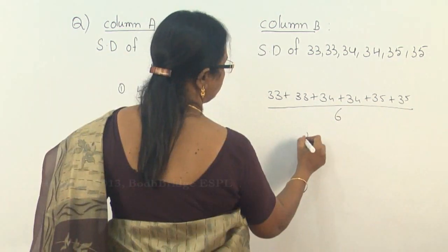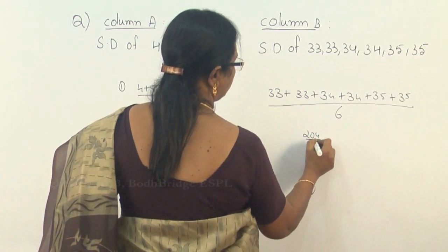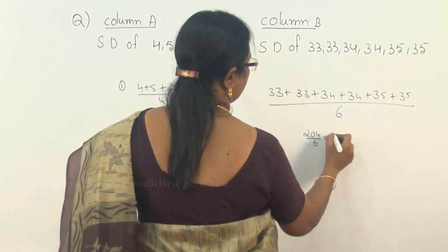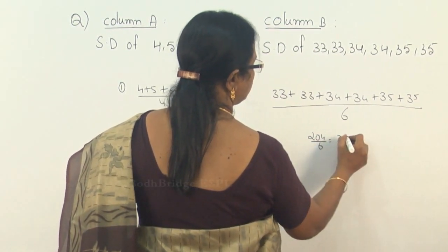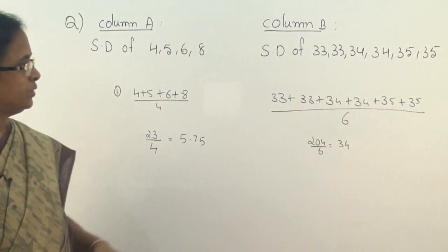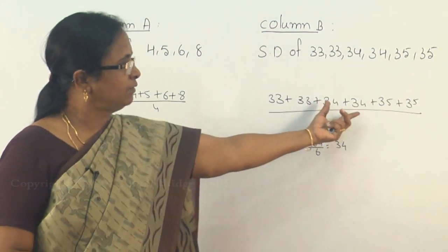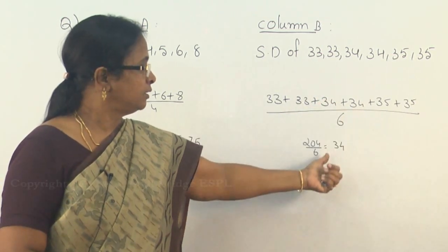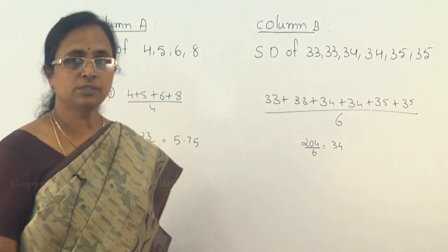That is 204. 204 by 6 is 3, balance is 2, 24 is 4 times 34. Or you can also directly say as the middle value will be taken as the mean. So we can directly say the mean is 34.